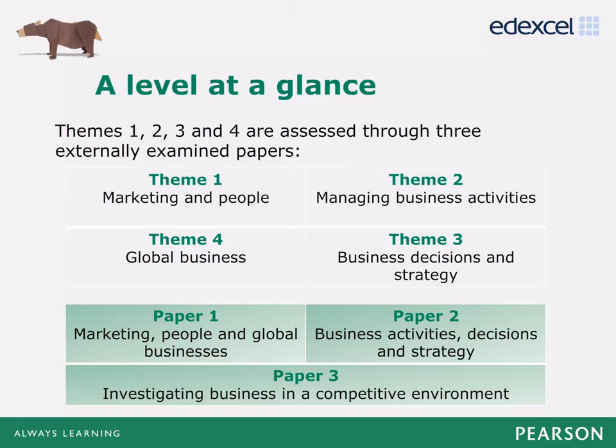There are three externally examined papers for the A Level qualification. Theme 1 and Theme 4 are assessed in Paper 1, Theme 2 and Theme 3 are assessed in Paper 2, and Paper 3 assesses content from across the entire course, bringing all the concepts together. Paper 3 has a pre-released context which will be made available to centres in November, six months before the exam, to enable you to use this context in the classroom.